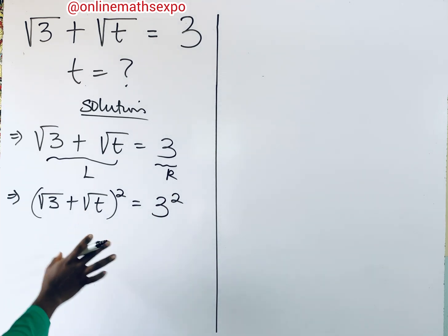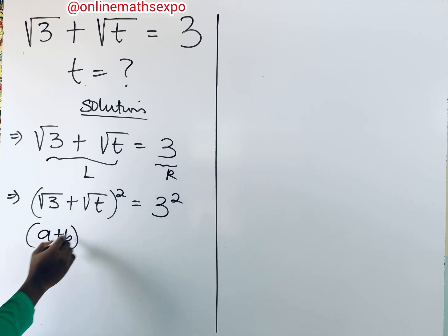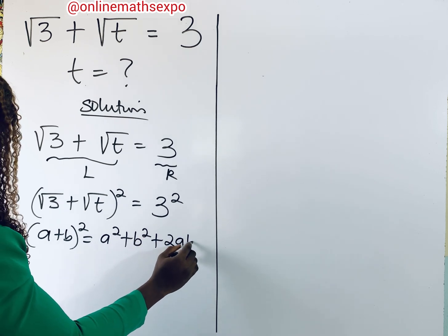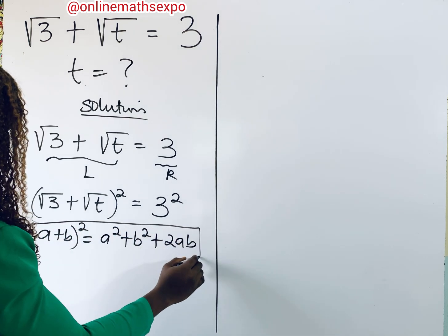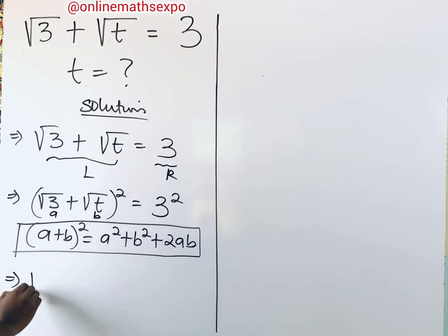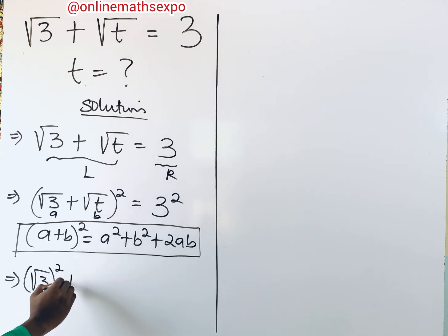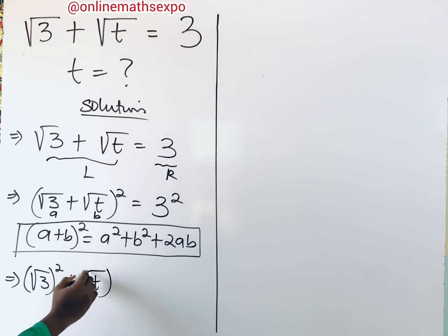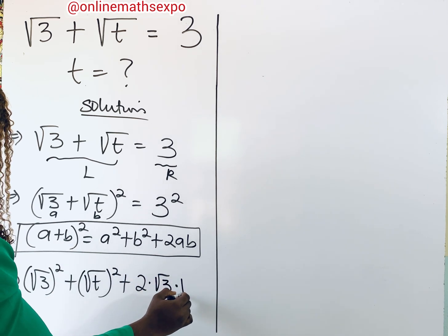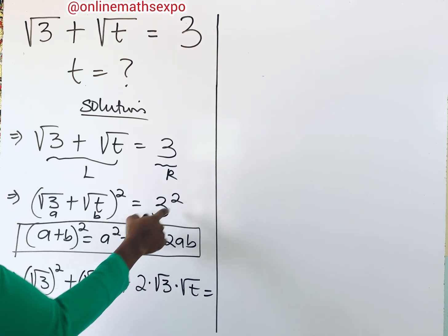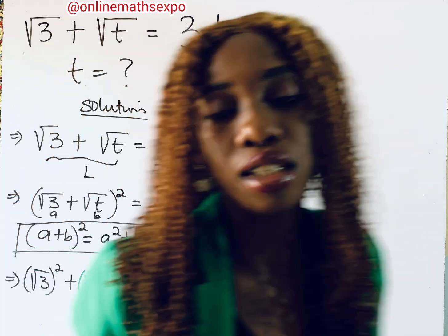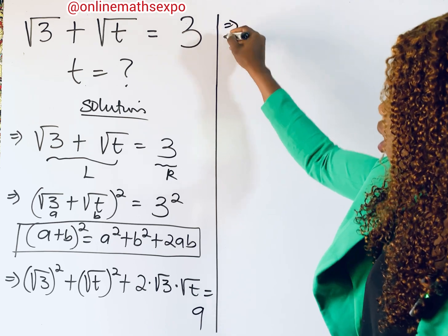Now we're going to expand this. Remember that (a + b)² equals a² + b² + 2ab. So our a is root 3 and our b is root t. This gives us: root 3 raised to the power of 2, plus root t raised to the power of 2, plus 2 times root 3 times root t, and this is equal to 3 squared, which gives us 9.